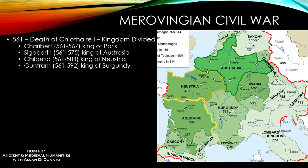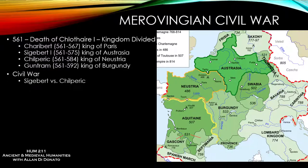At the death of Chlothar in 561, the kingdom looked something like this: Charibert ruled from Paris, Sigebert I ruled from Austrasia, his half-brother Chilperic ruled Neustria, and Guntram ruled Burgundy. The really interesting situation that emerged was a civil war between Sigebert and Chilperic.